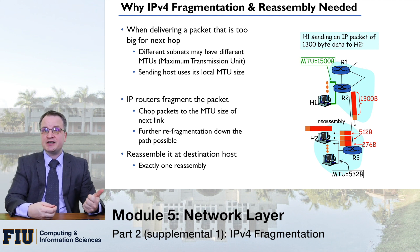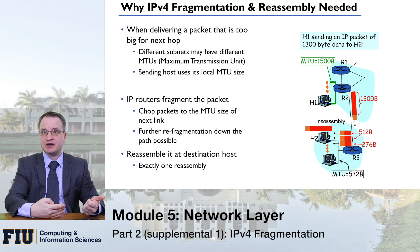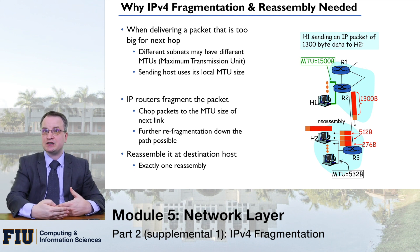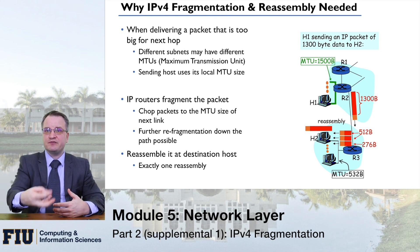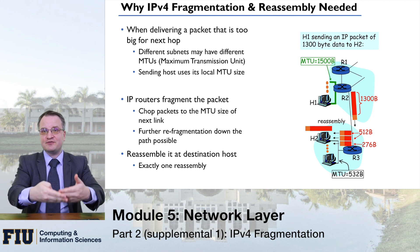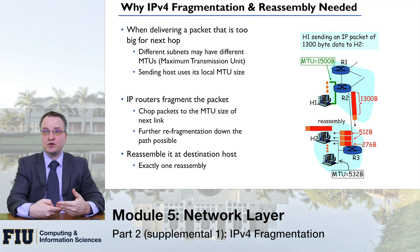First of all, a packet can be split multiple times. For example, if you reach a point where you cannot forward a packet bigger than 8000 bytes, you split it to the MTU size of 1500 bytes and send it out. If at some point a fragment still cannot be forwarded, you can fragment each fragment further. You can do it multiple times depending on the MTU size of the links.